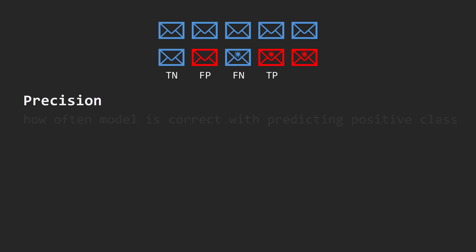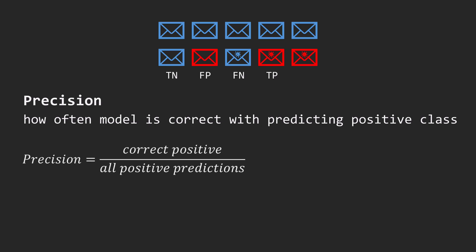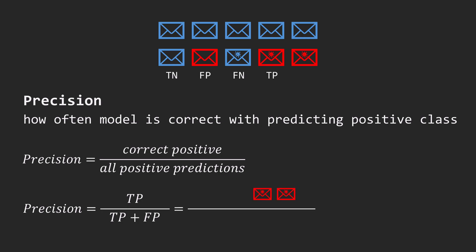Precision measures how often the model is correct when predicting the positive class. That is, how many emails predicted as spam were actually spam. It is calculated by dividing true positives by all predicted positives.